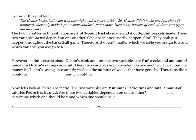So my variables are my two-point baskets and my three-point baskets. If you think about that — does the number of two-point shots depend on how many three-point shots I make, or vice versa? No, it doesn't. So if I were to graph this information, it wouldn't matter what goes on the x-axis or the y-axis, because they do not have a dependent relationship.